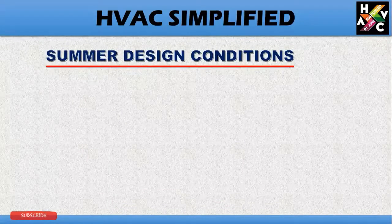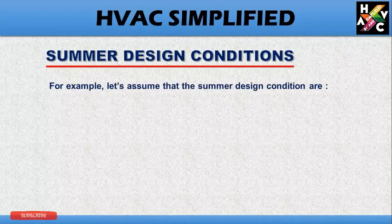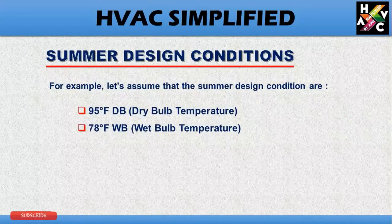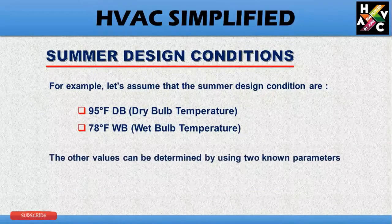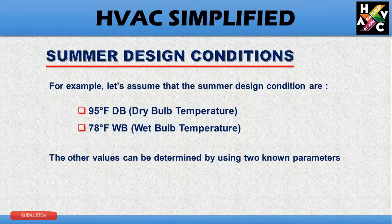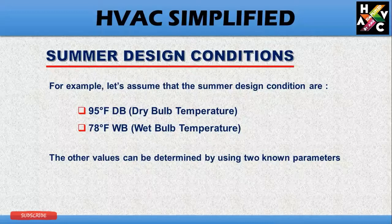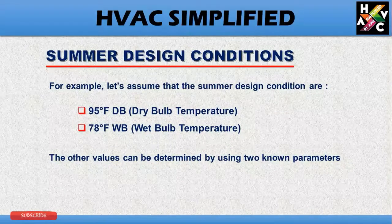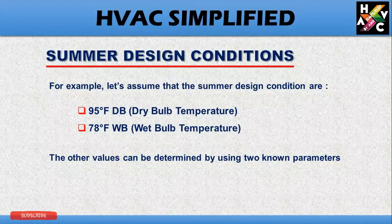Let us understand by using a few examples of summer design conditions. For example, let us assume the summer design conditions are 95 degrees Fahrenheit as the dry-bulb temperature and 75 degrees Fahrenheit as the wet-bulb temperature. The other values can be determined using these two known parameters. The basic concept of the psychrometric chart is to determine all parameters by using any two given parameters.